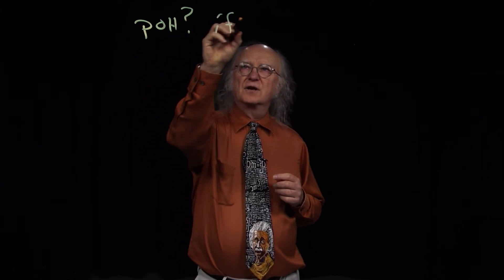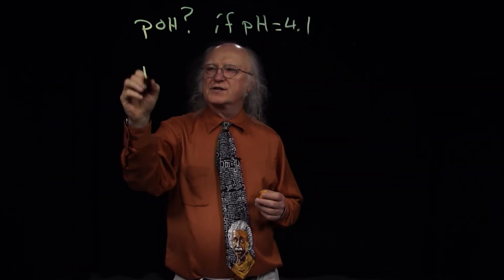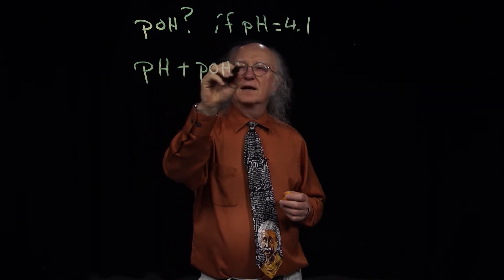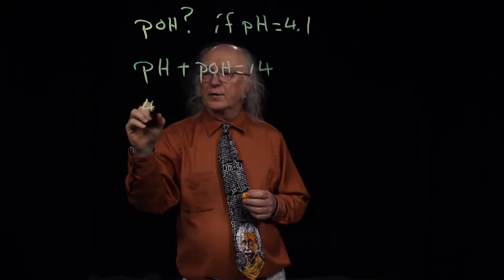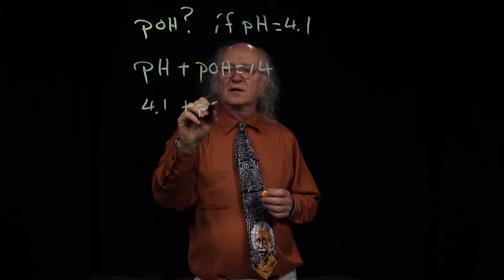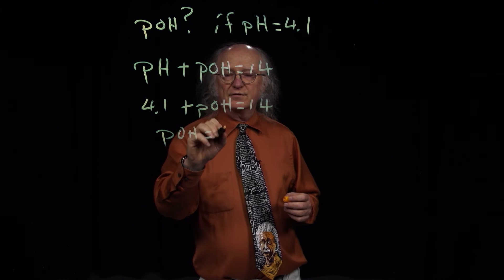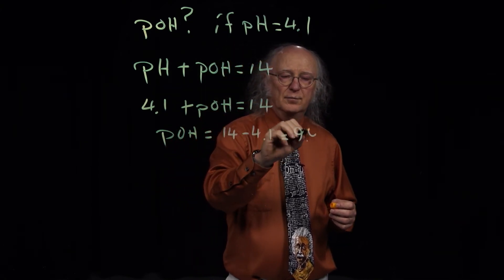For problem number three, it's a very simple problem. The problem states: what is the pOH if the pH of a solution is equal to 4.1? We just simply need to remember that pH plus pOH is equal to 14. Plugging in our numbers, we have 4.1 plus the pOH equals 14. The pOH, therefore, is equal to 14 minus 4.1, and that equals 9.9.